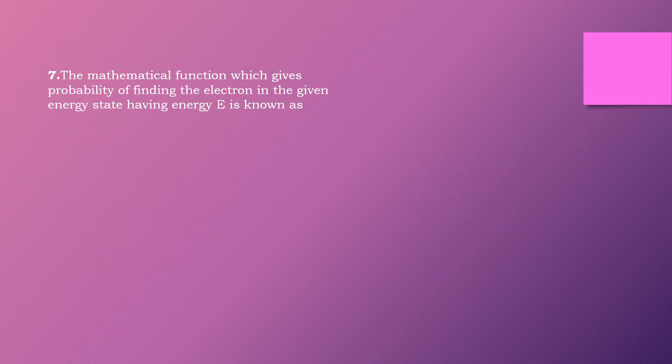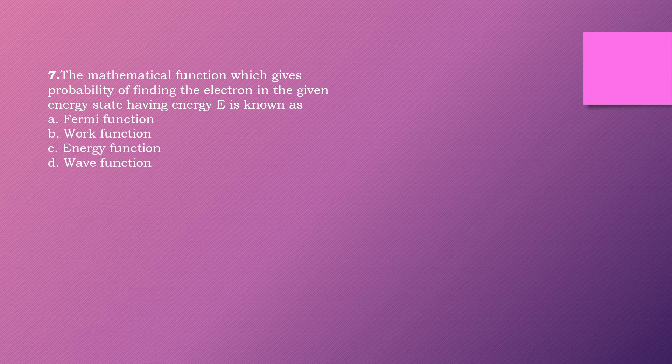Question seven: The mathematical function which gives the probability of finding an electron in a given energy state having energy E is known as dash. Options are: Fermi function, work function, energy function, wave function. The right answer is option A: Fermi function.